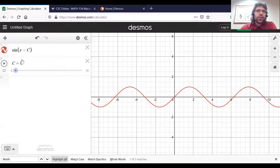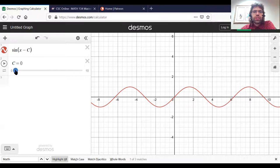Here's the sine of x minus c. At the moment, c is zero, so this is just the sine of x. Let's start increasing c and see what that does to the curve.